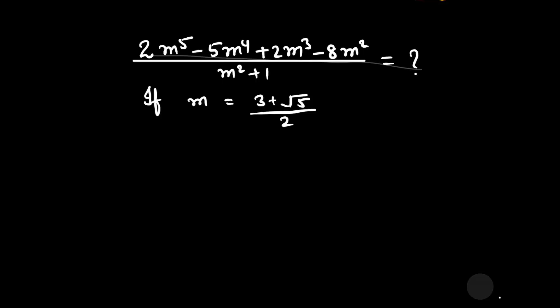Welcome to our YouTube channel Saval Bawal. Our question is: if m is equal to 3 plus square root of 5, divided by 2, then we have to find the value of 2m⁵ minus 5m⁴ plus 2m³ minus 8m², all divided by m² plus 1.